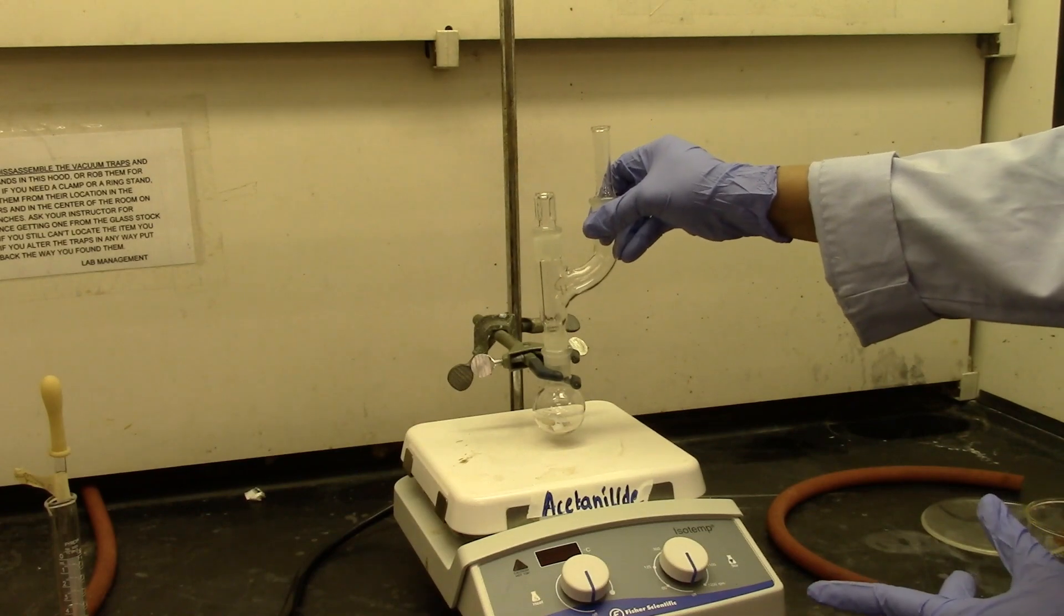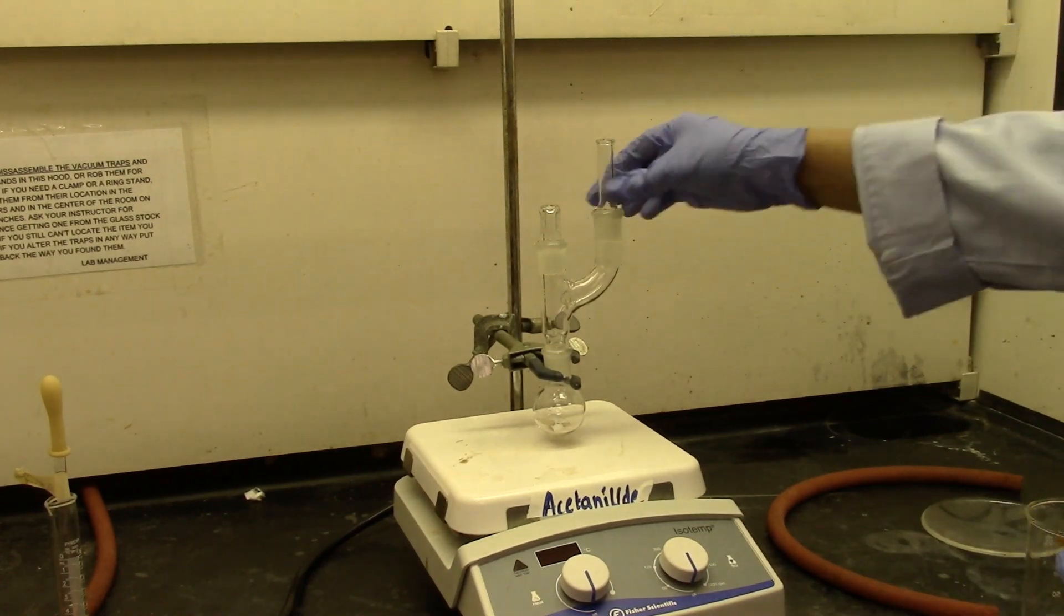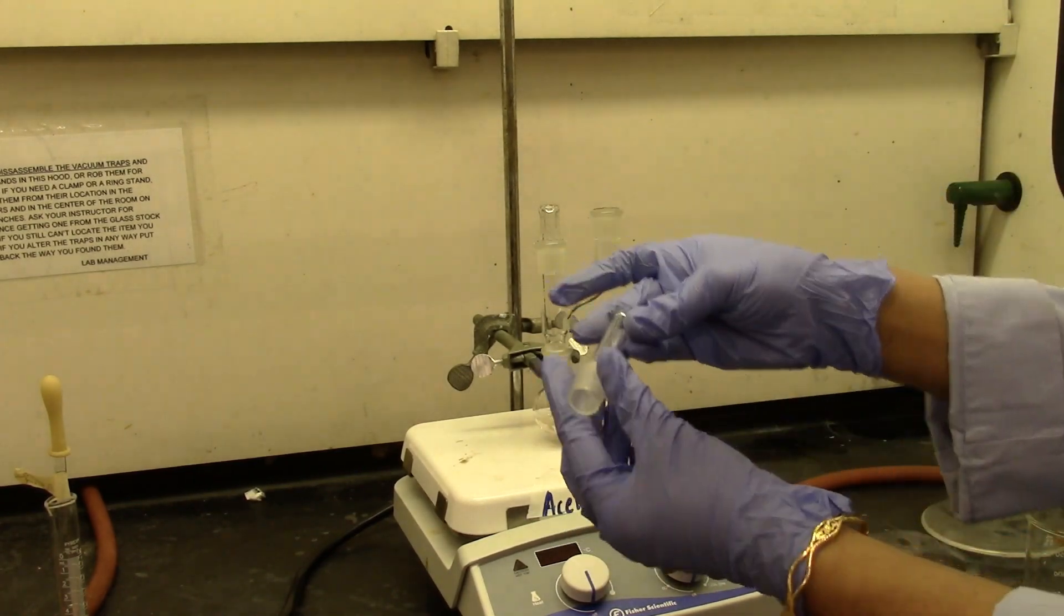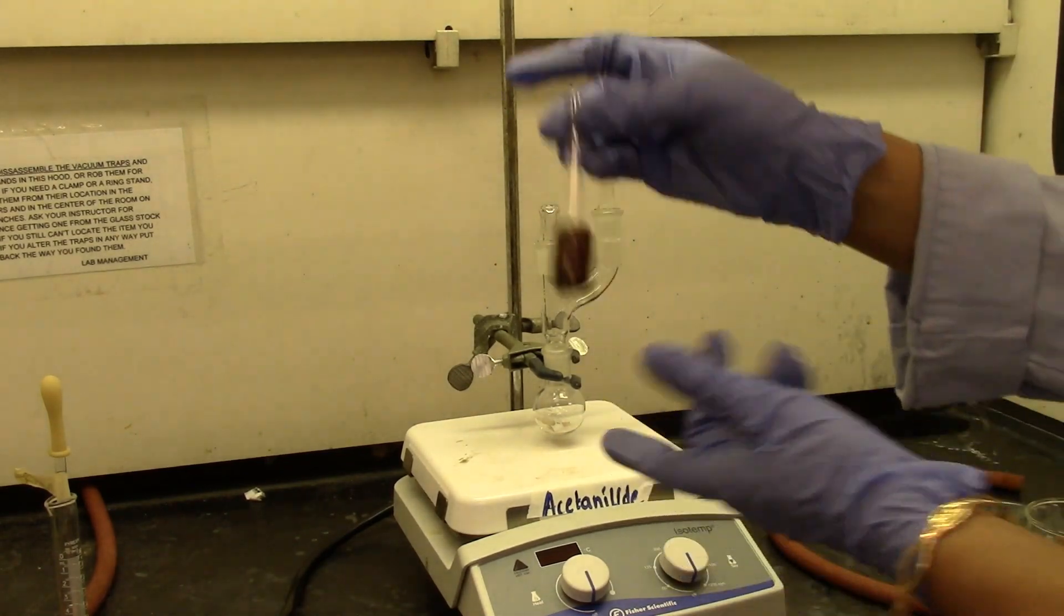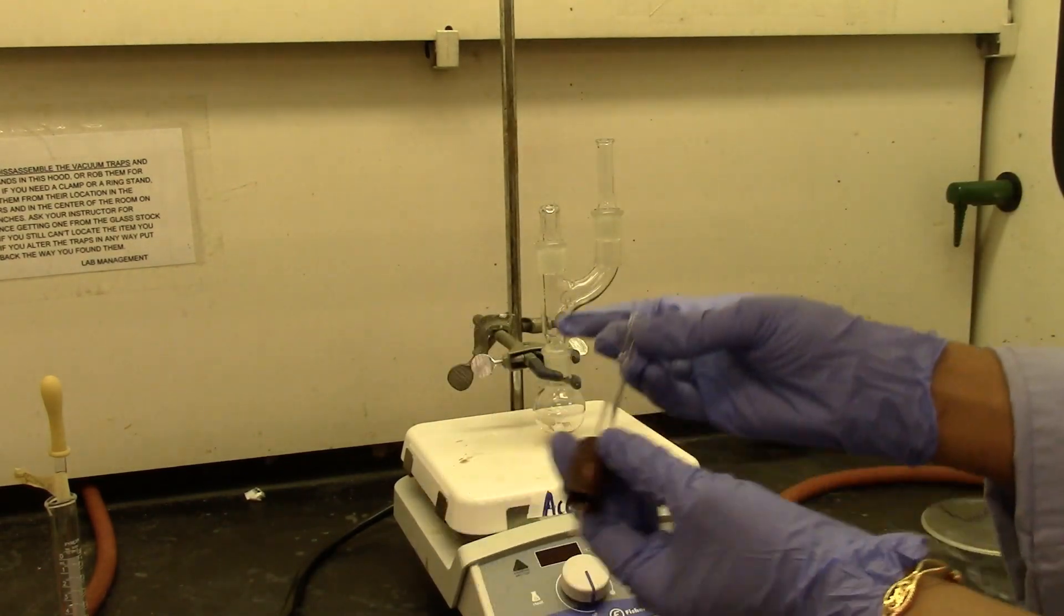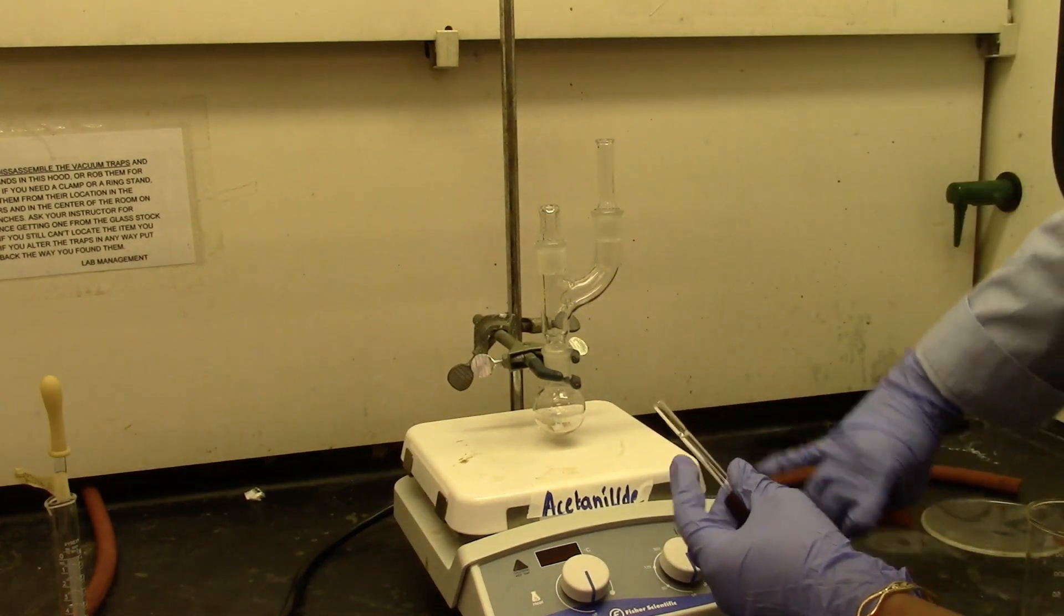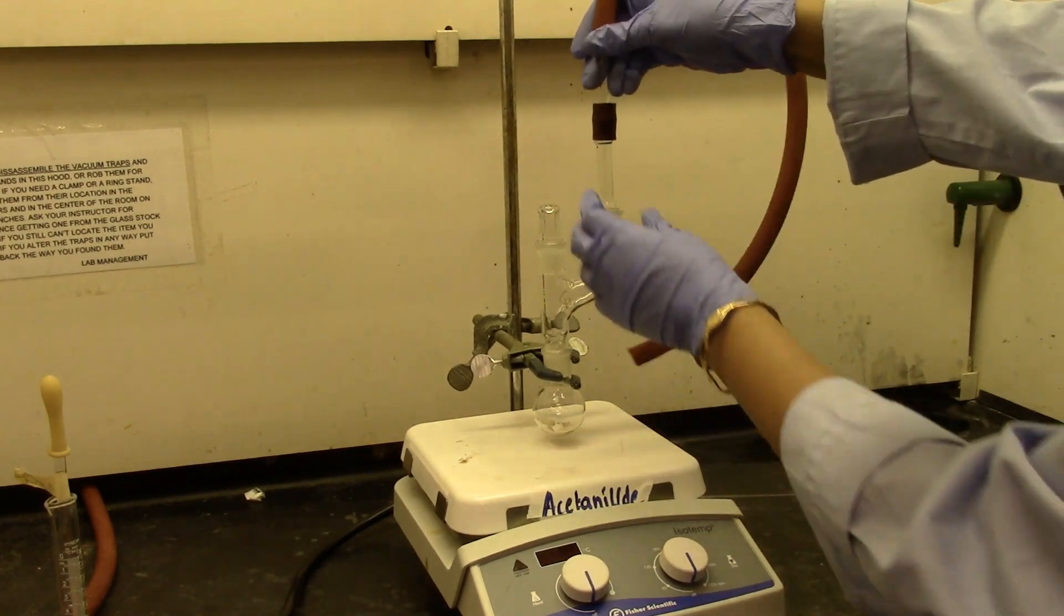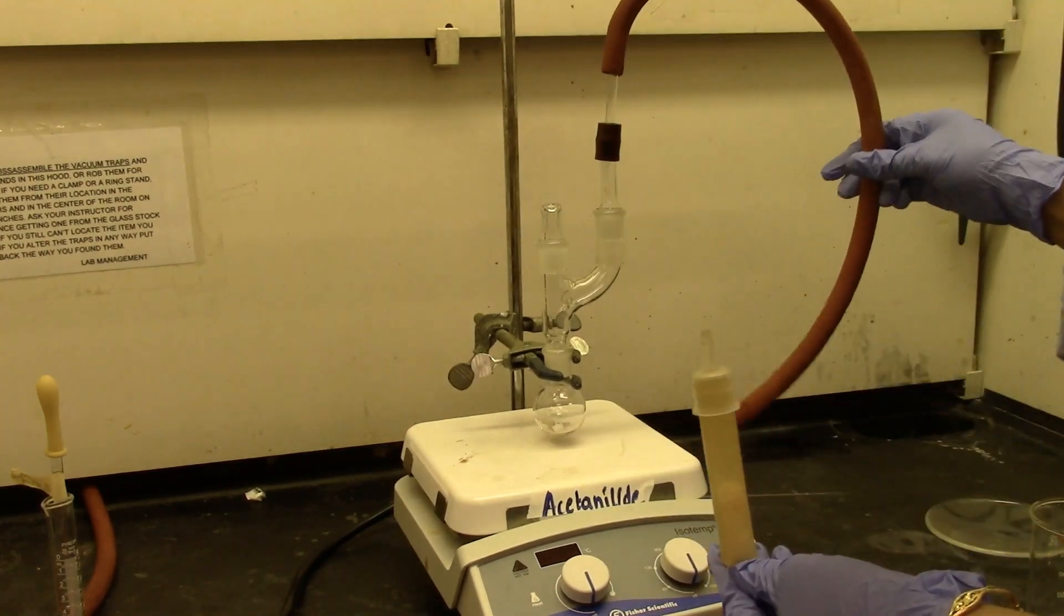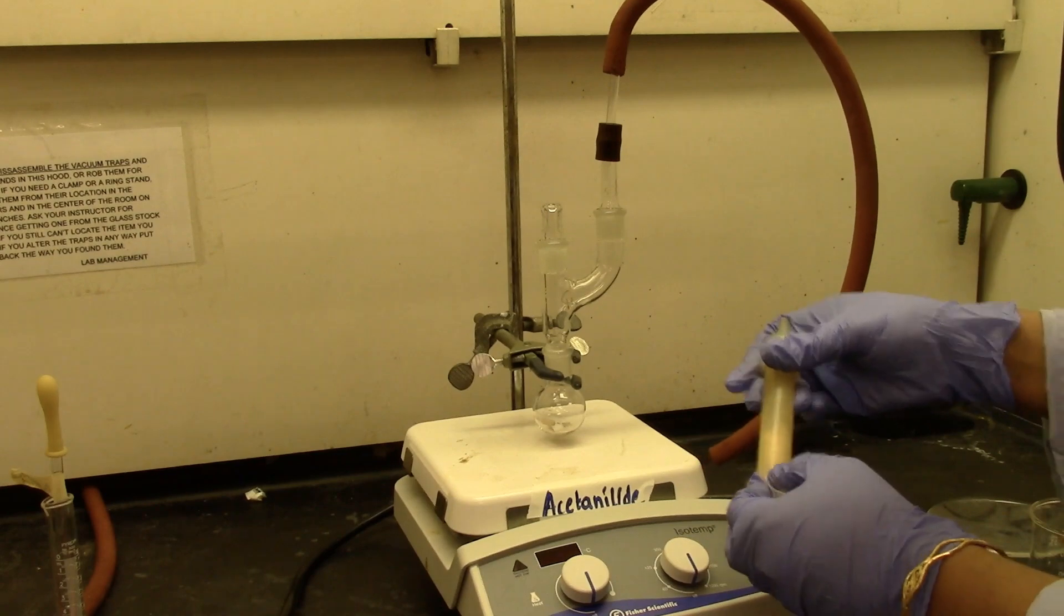So with the Claisen head that goes on top, and this is a thermometer adapter, using this, I'm going to use a glass insert, just like this, and attach a tubing which goes on top here.